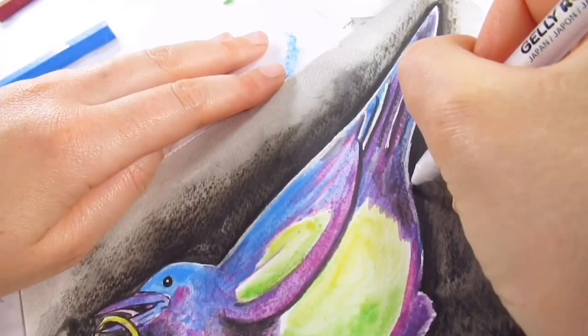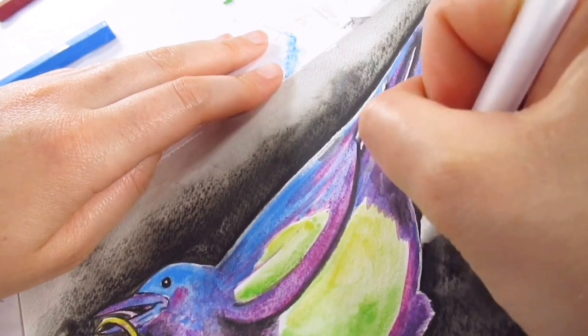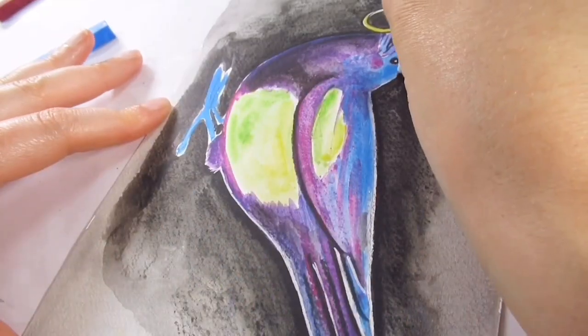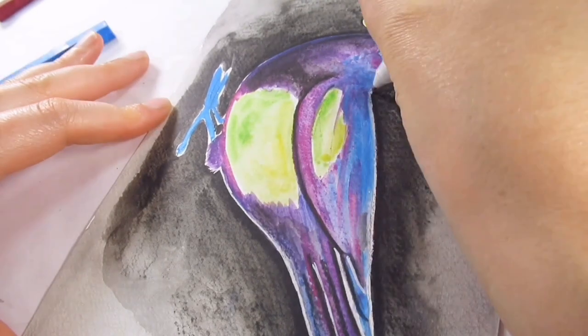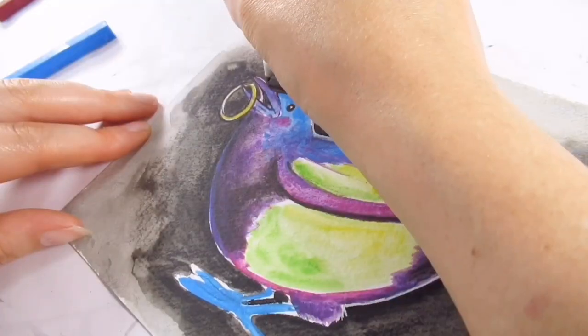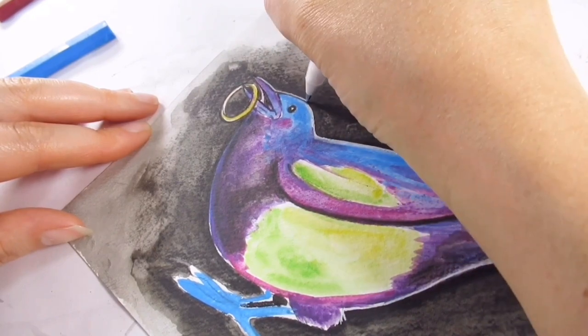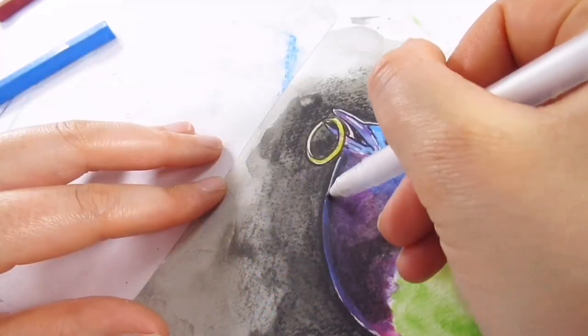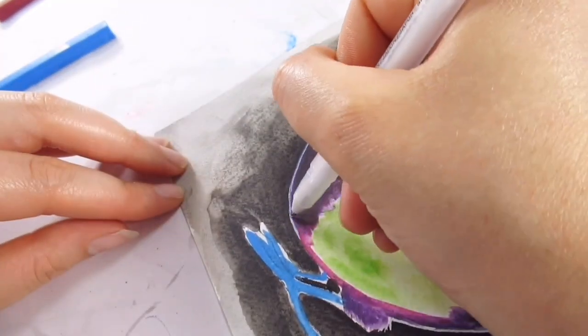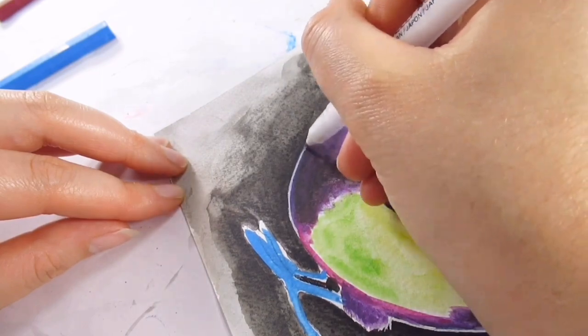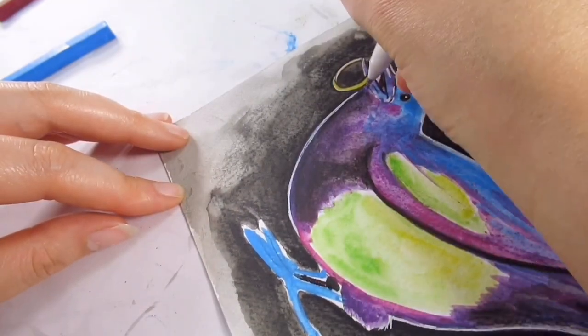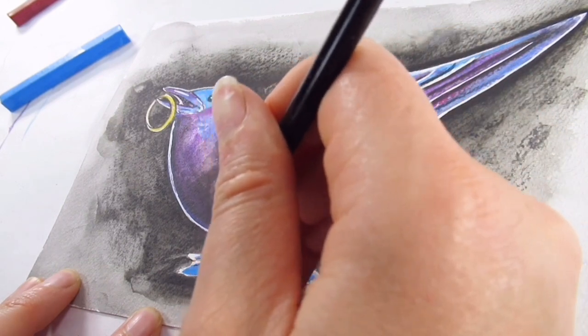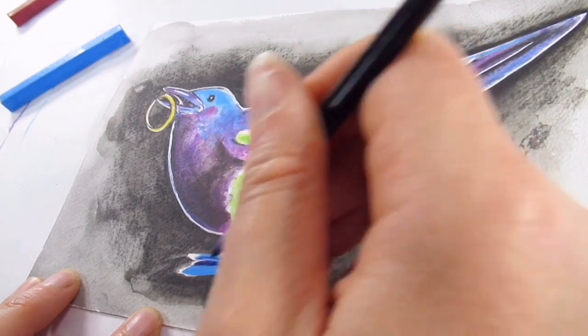To add some highlights to the bird I used the Jelly Roll pen and I think maybe because it's quite hot over here in the UK at the moment it was misbehaving a little bit and I really had to work it. Or I'd got a dud, but to be honest I've got that many white gel pens I'm not gonna cry over it, it's okay. But yeah I did have to work it quite hard but I quite like how it's just made it pop a little bit more from the background.